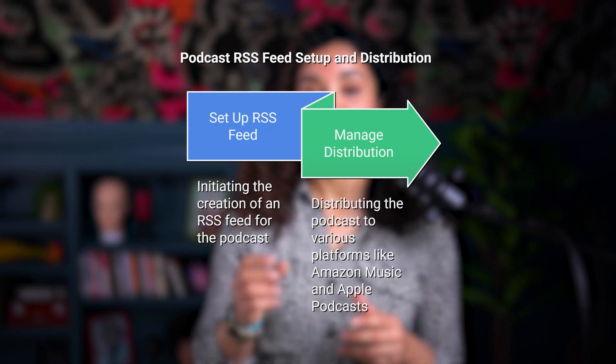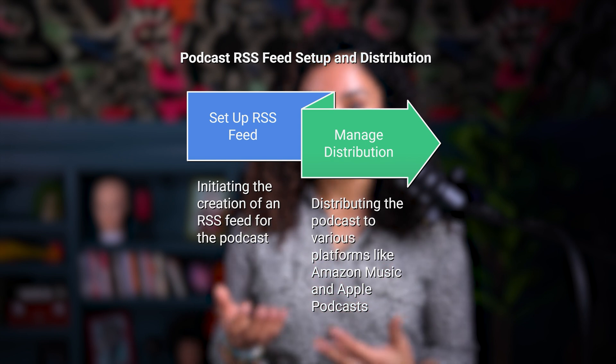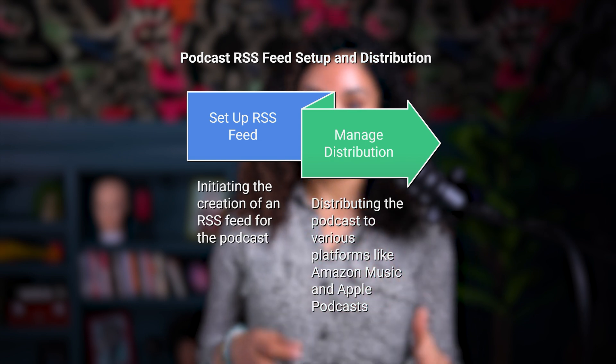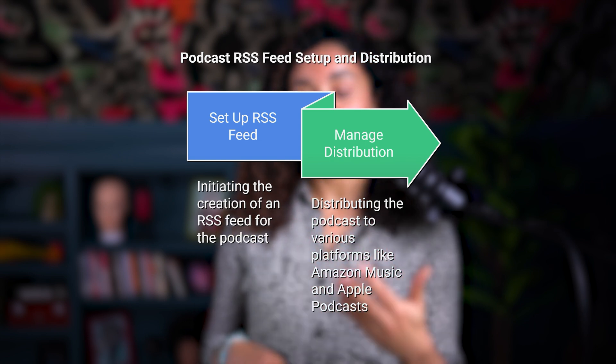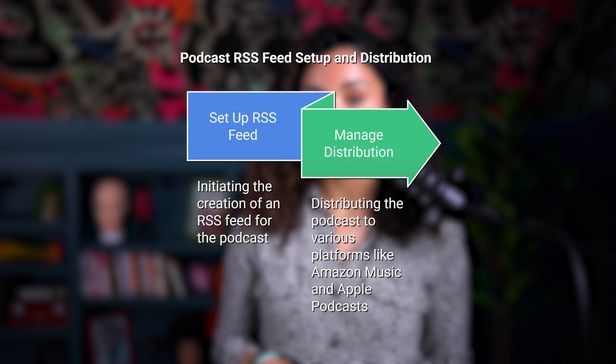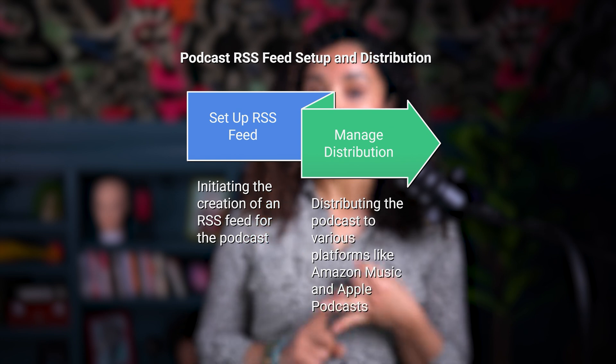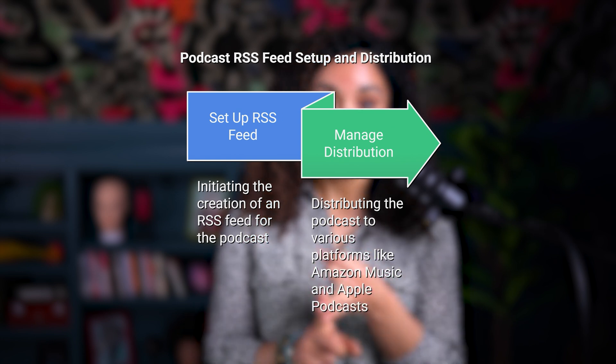You can upload audio only, or you can upload your video podcast too. When you do a video podcast, the video will be distributed only on Spotify. And then you can set up your RSS feed and manage distribution to other podcast platforms like Amazon Music and Apple Podcasts as well.